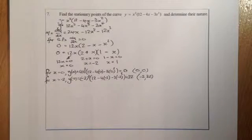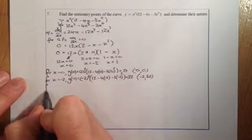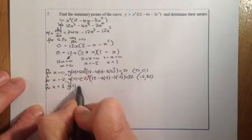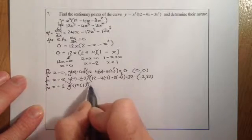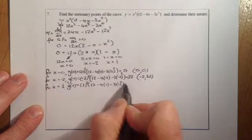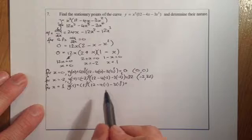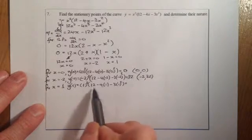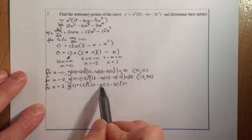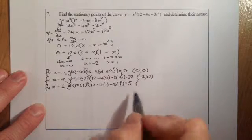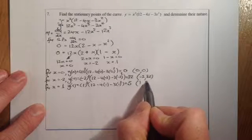Final one: for x equals 1, substituting in gives 1 squared times (12 minus 4 times 1 minus 3 times 1 squared). That's 1 times (12 minus 4 minus 3), which is 1 times 5, giving y equals 5. So my final coordinate is (1, 5).